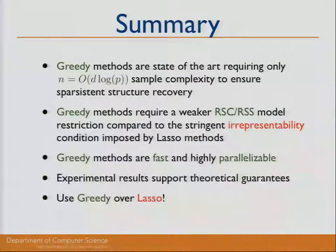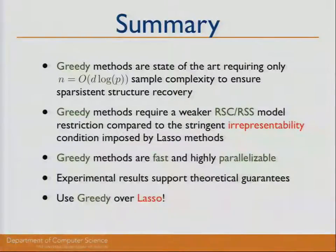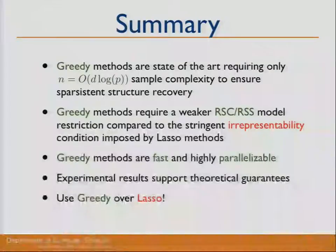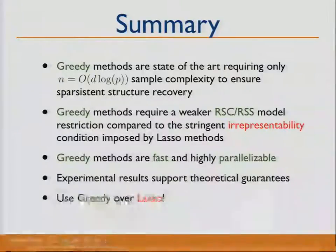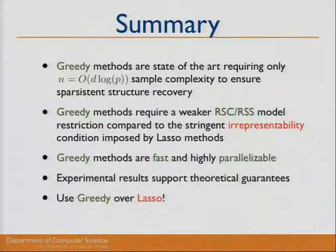Q: If you try different initializations, do you always get the same results? A: We begin with an empty set. If you initialize with some subset, we haven't tried that — it would be interesting to explore. Q: How do you set your parameter? A: We provide a bound for setting the stopping criterion — it should be set around D log P. It's ultimately a tuning parameter. Q: Have you tried on really large dimensions? A: No, not beyond what we simulated.